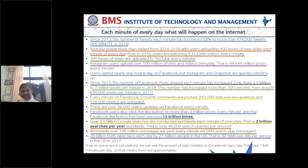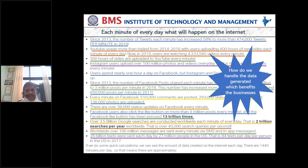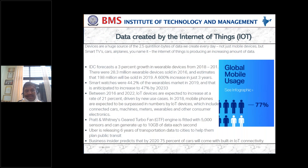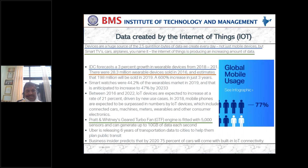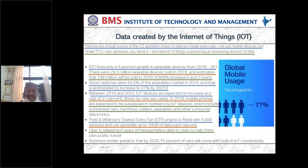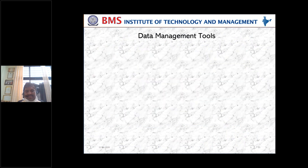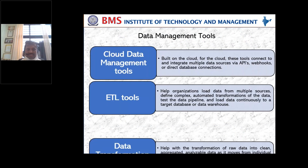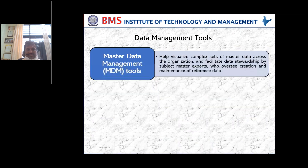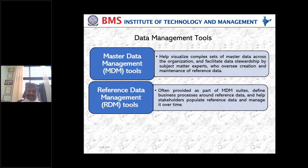Because of the Internet of Things and the concept of 'smart,' we see how data is getting generated and how we are moving from 2015 through to 2025. There was also a question about the Pratt & Whitney gear turbo fan engine — it is fitted with a certain number of sensors and can generate up to a specific amount of data. These are the services and different tools: one is cloud data management tools, ETL tools, data transformation tools, user data management tools, master data management, reference data management, and data visualization analytics. This is the topic where we have landed.